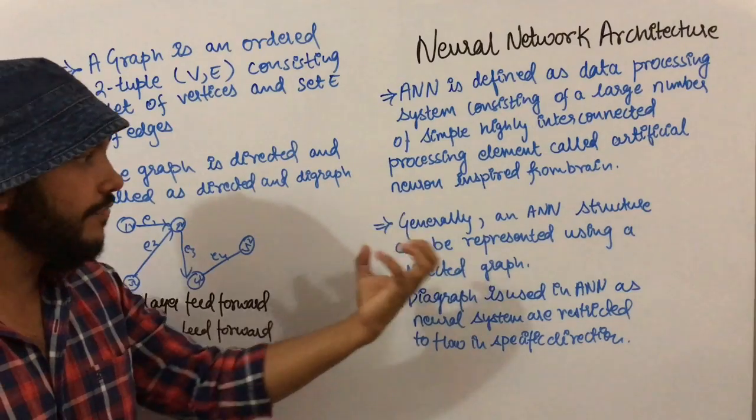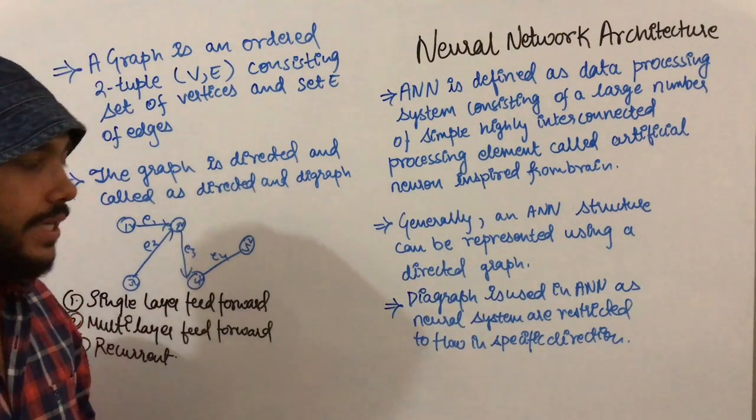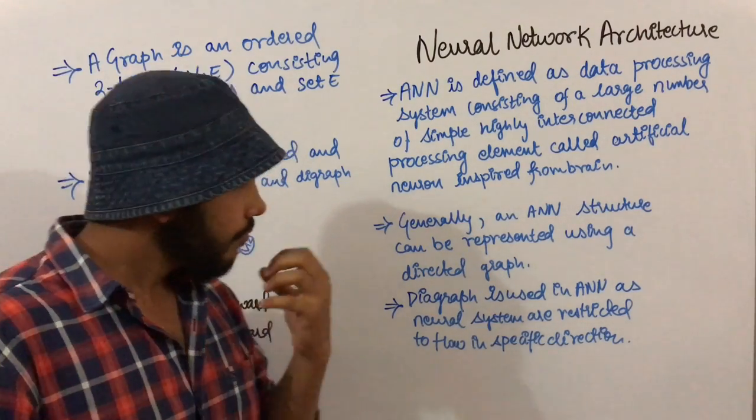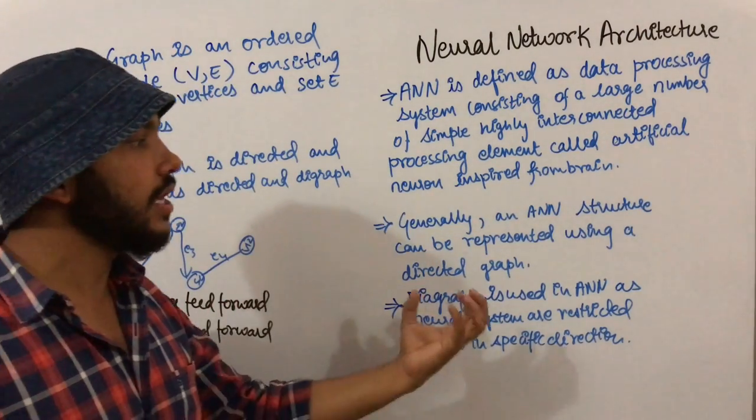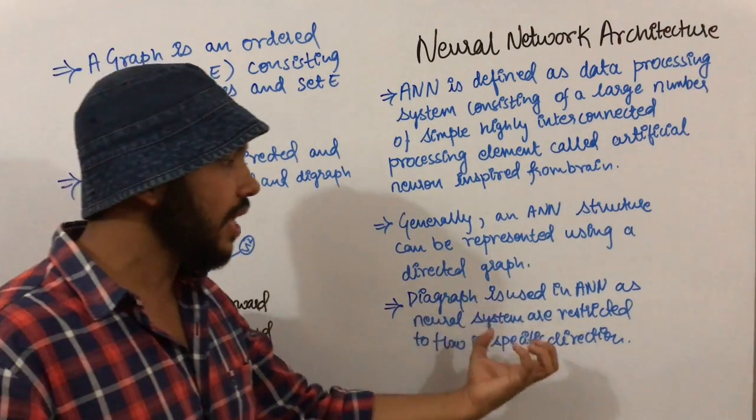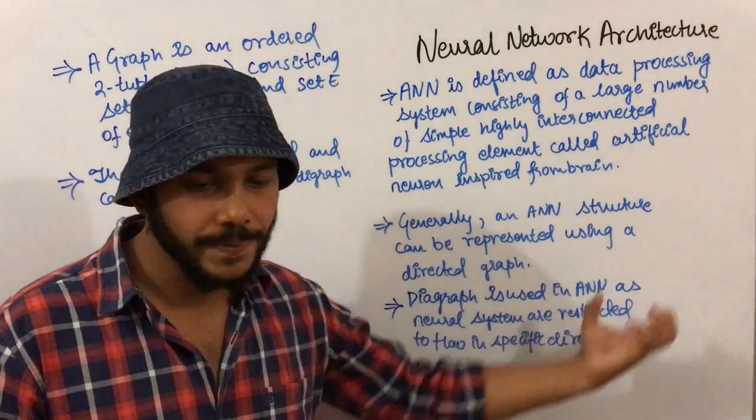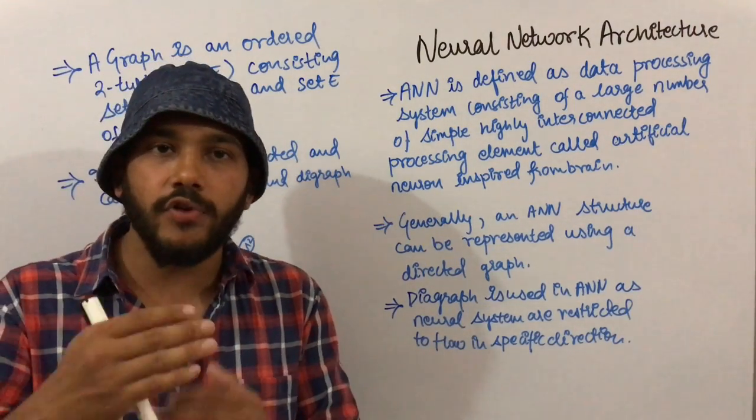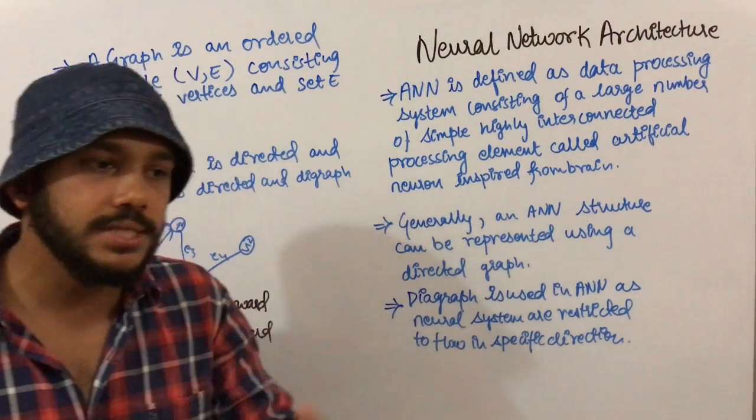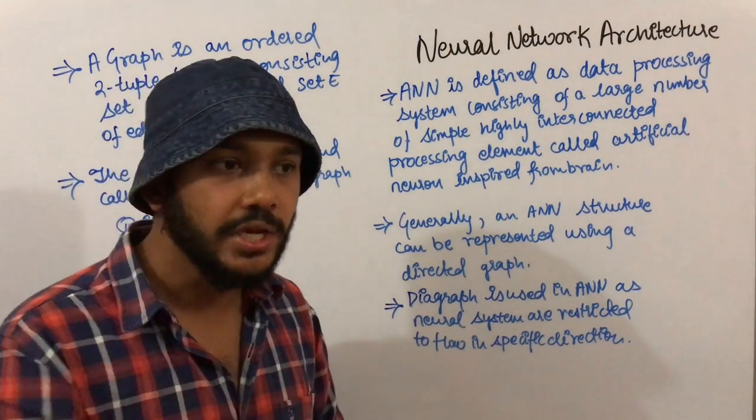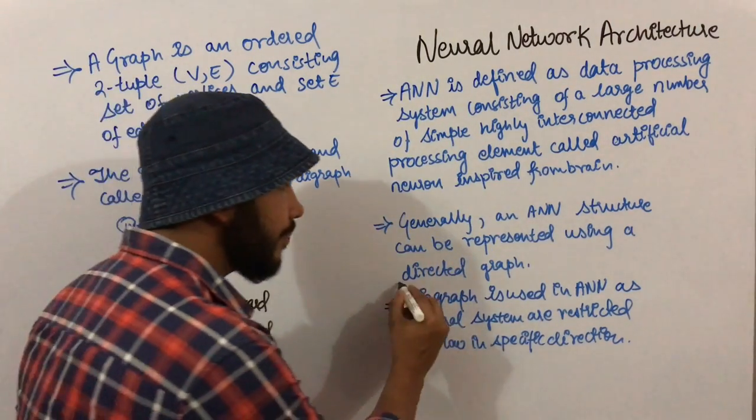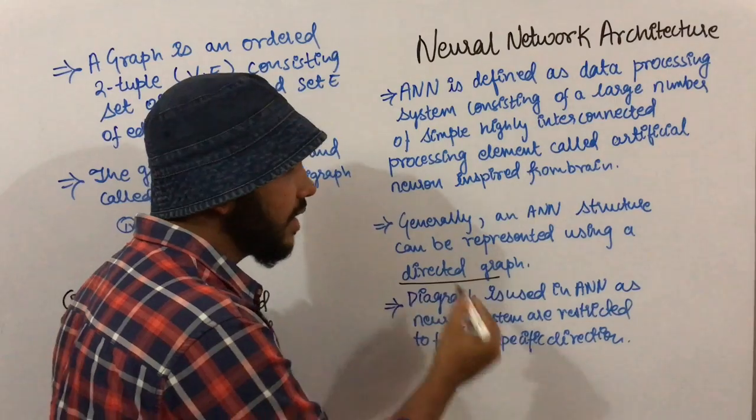Why is artificial neural network represented with a directed graph only? Why can't we represent it with a non-directed graph? Artificial neural networks are represented using directed graphs because neural systems are restricted to flow in a specific direction. Data transfers from one neuron to another neuron. If data is flowing, then obviously it's flowing in some direction. That's why we represent the artificial neural network as a directed graph, also called a digraph.